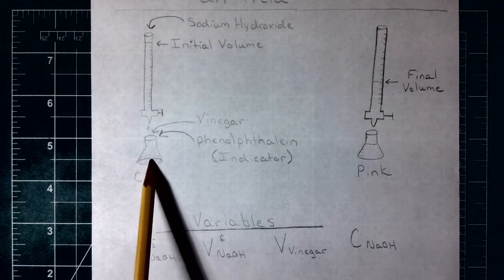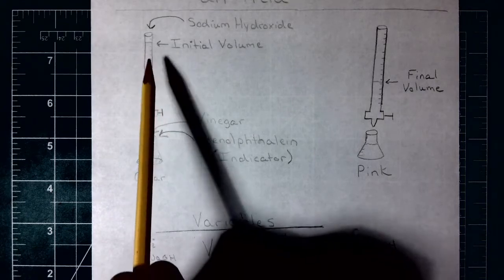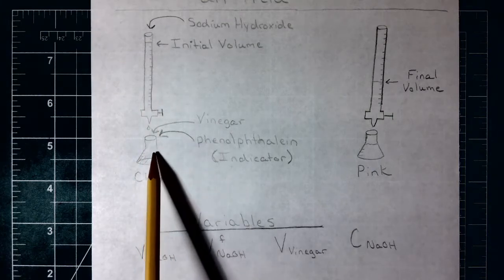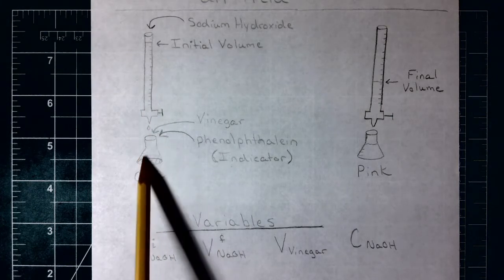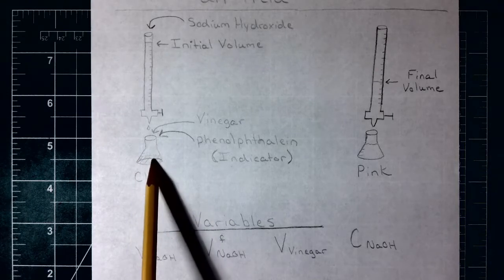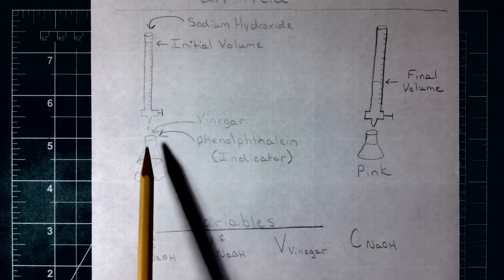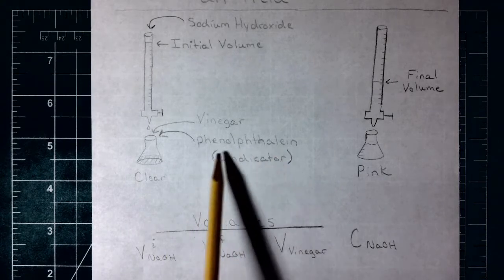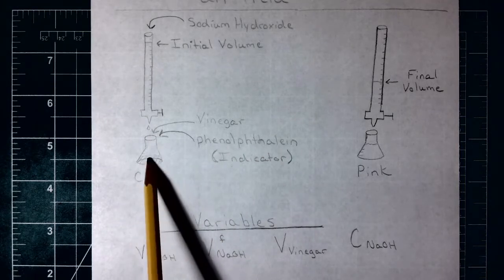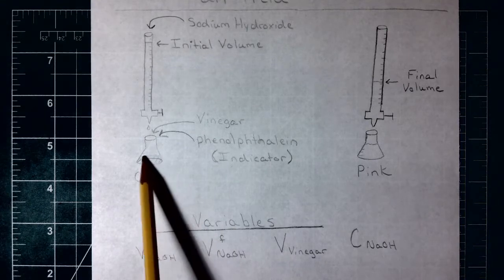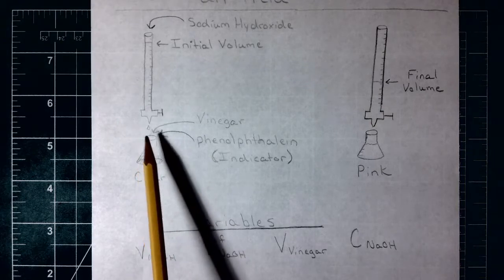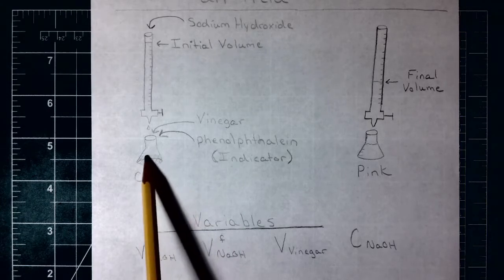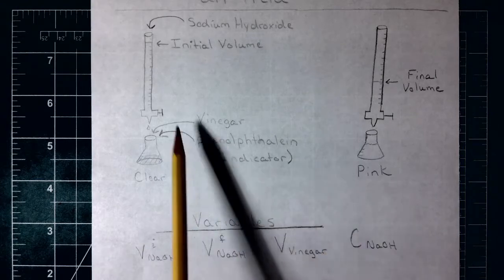We're going to add a certain volume of vinegar into the container, and then we're going to trickle in our known sodium hydroxide until we have the exact same number of moles added as we originally had — so the moles of acid are going to equal the moles of sodium hydroxide. To know when that occurs, we're going to add an indicator, which is like a dye. When the solution is acidic it's going to be clear, and once it turns basic — right when it neutralizes — it's going to turn pink, and you'll see that over here.